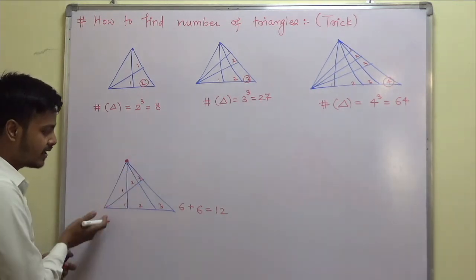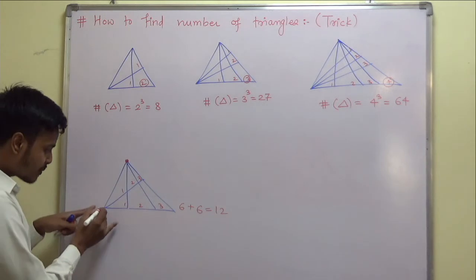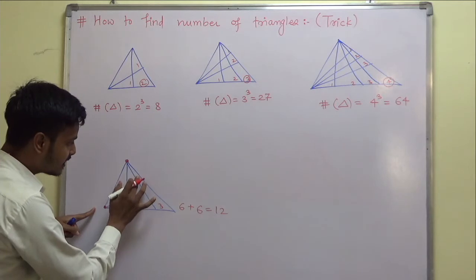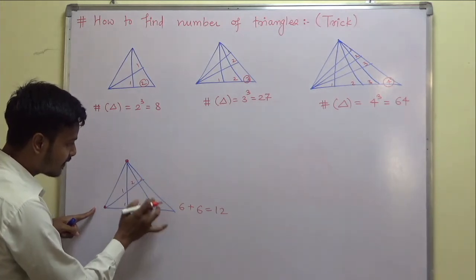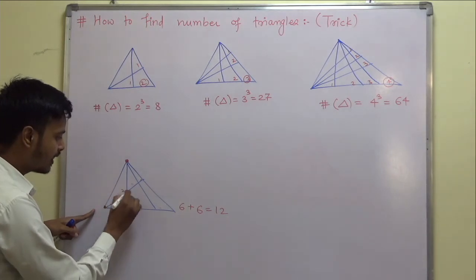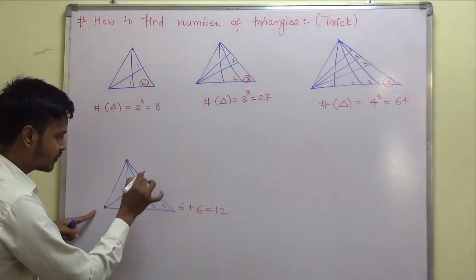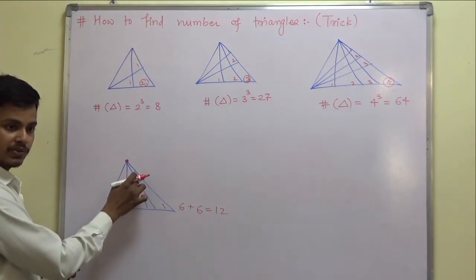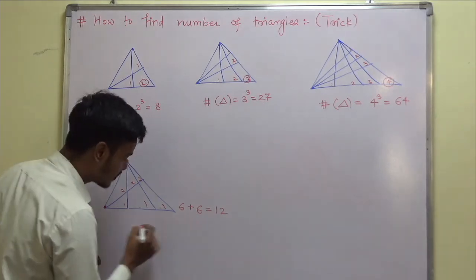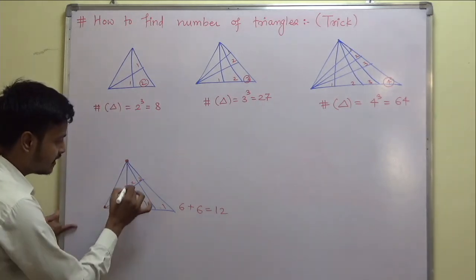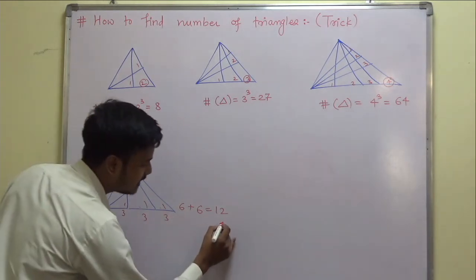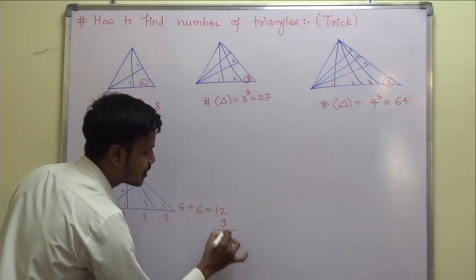This point is making a base and this other point is also making a base. If I take this second point as my reference, counting gives 1 plus 2 equals 3, then 1 plus 2 equals 3, then 1 plus 2 equals 3. So 3 plus 3 plus 3 equals 9 triangles from this reference point. Combining both counts: 12 plus 9 gives 21 triangles total — but that is not the correct answer.